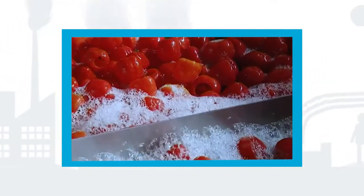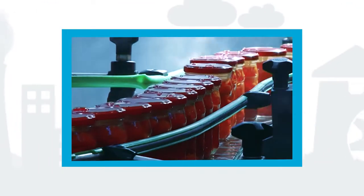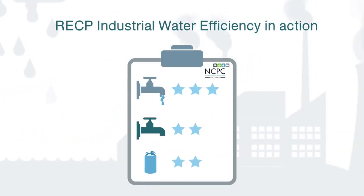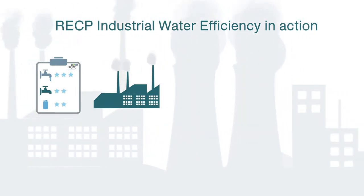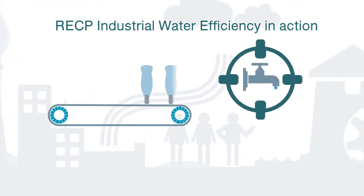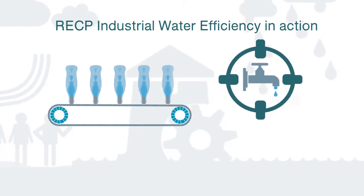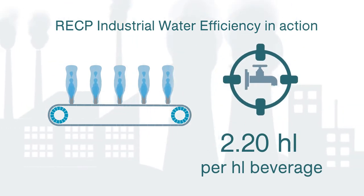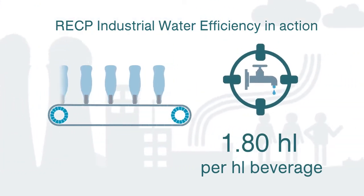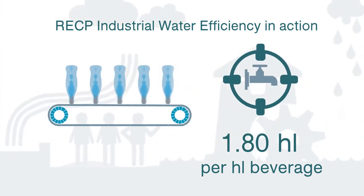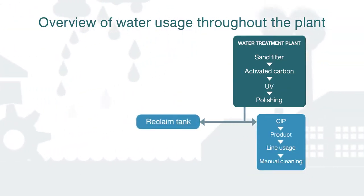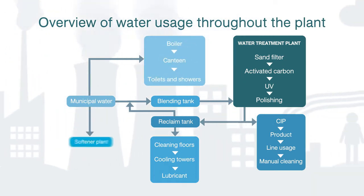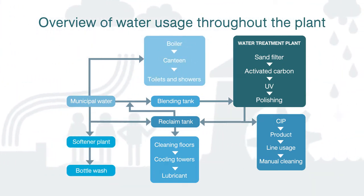Let's take a look at RECP Industrial Water Efficiency in action. The NCPCSA conducted an assessment at a proactive, high-profile international soft drinks group. The plant had tight targets for water use management and reduction, which included a self-imposed reduction target aimed at reducing specific water consumption from 2.2 down to 1.8 hectolitres of water per hectolitre of beverage produced. In the assessment process, a detailed site water balance provided an overview of where and how much water was being used in the process.